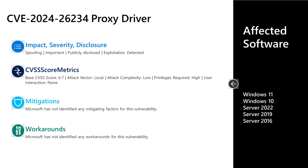The first vulnerability I'll cover is CVE-2024-26234. This is an important spoofing vulnerability in the proxy driver component of Windows. It is publicly disclosed and exploitation has been detected. It has a base score of 6.7 on that scale of 10. The attack vector is local, attack complexity is low, high privileges are required, and no user interaction is needed. There are no documented mitigations or workarounds. Affected software includes all versions of Windows in mainstream support — Windows 10 and 11 on the desktop side, and Server 2016, 2019, and 2022 on the server side.